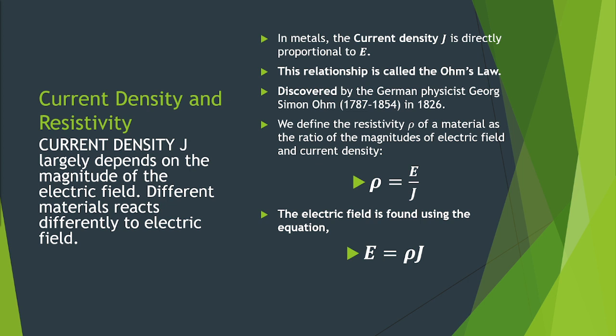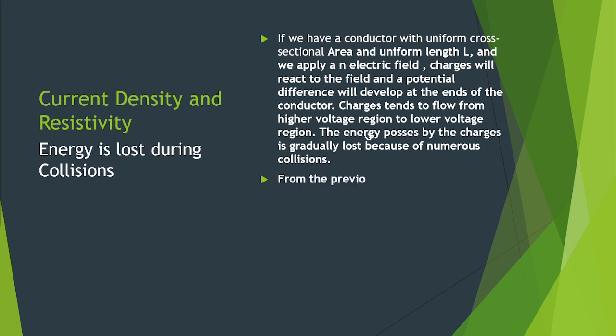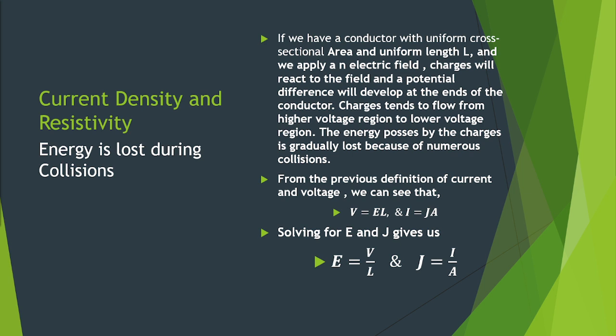We know that energy is lost during collisions. If we have a conductor with uniform cross-sectional area and uniform length L and we apply an electric field, charges will react to the field and a potential difference will develop at the ends of the conductor. Charges tend to flow from higher voltage region to lower voltage region. The energy possessed by the charges is gradually lost because of numerous collisions. From the previous definition of current and voltage, we can see that voltage V is equal to E times L, where L is the length of the conductor and current I is equal to current density J times A. Solving for E and J gives us E is equal to V over L and J is equal to I over A.